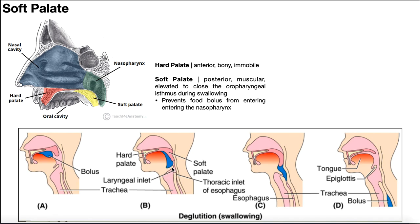This structure here is the epiglottis. As the bolus of food moves down, it pushes down on the epiglottis. As it goes into the laryngopharynx and down toward the esophagus posteriorly, you can see it pushing down that epiglottis. When the epiglottis folds down, it covers the opening to the trachea and prevents food from going down into the trachea, leaving only one path — down into the esophagus.